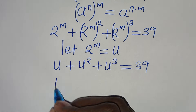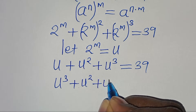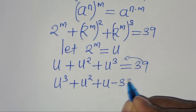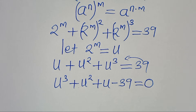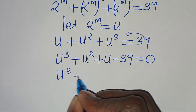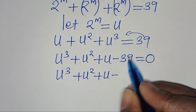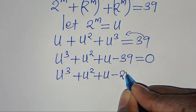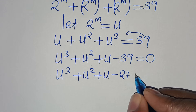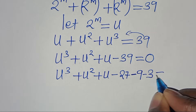We can write this as u cubed plus u squared plus u, and taking 39 to the left-hand side gives minus 39, this is equal to 0. Now we have u cubed plus u squared plus u minus 39, which is the same thing as minus 27 minus 9 minus 3, equal to 0.